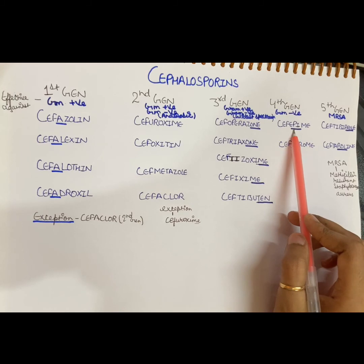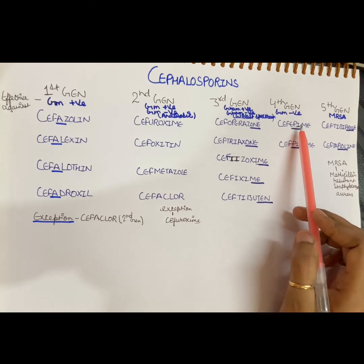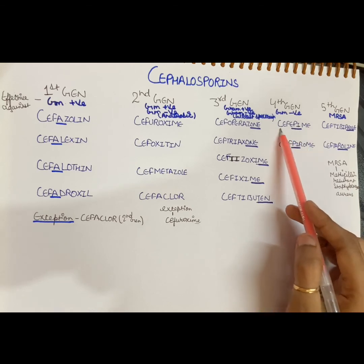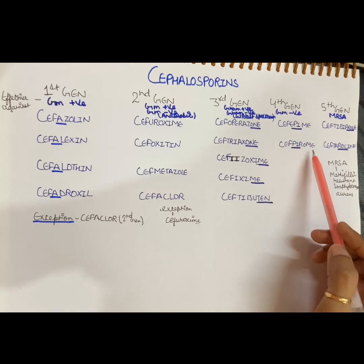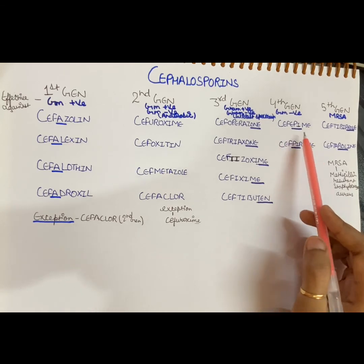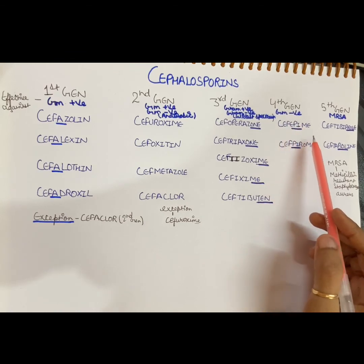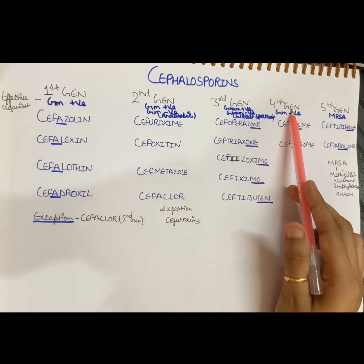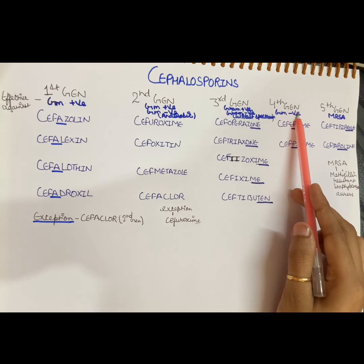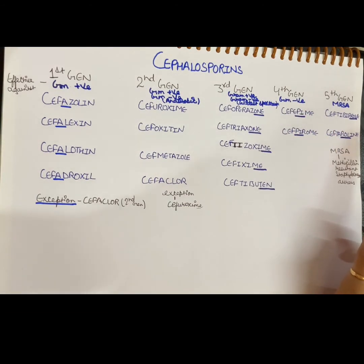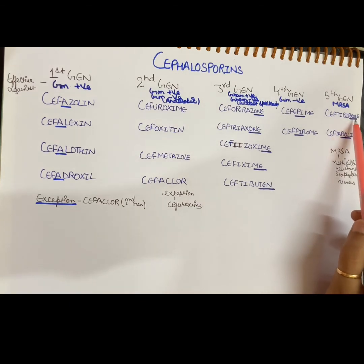Now moving to the fourth generation: what we see here is 'PI' in between — for example, Cefepime and Cefpirome. If after Ceph you find 'PI', then it belongs to the fourth generation cephalosporin.